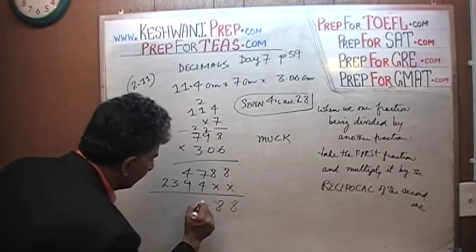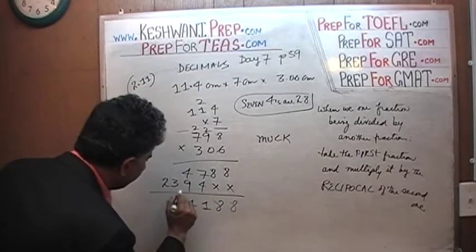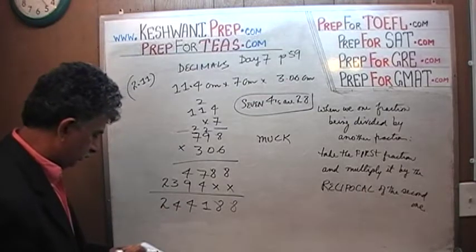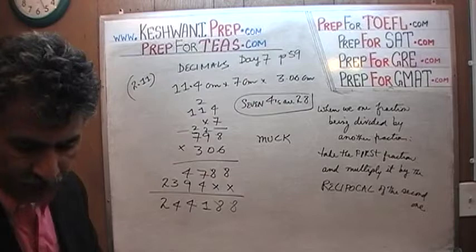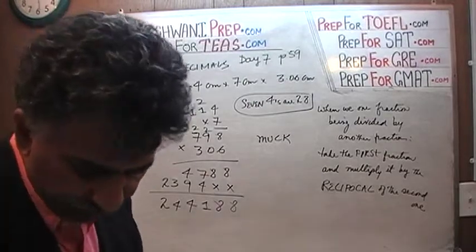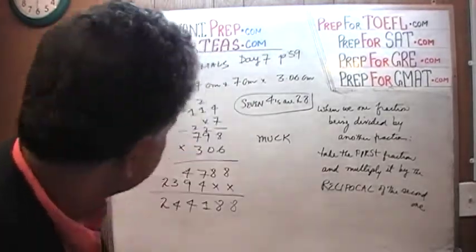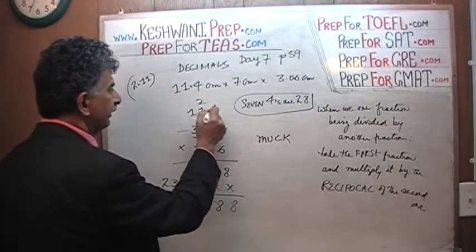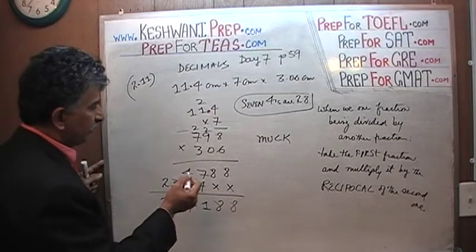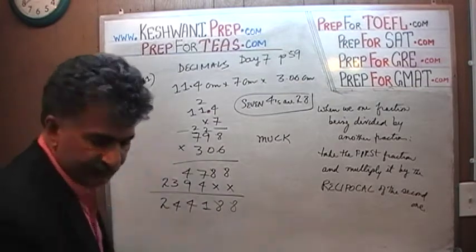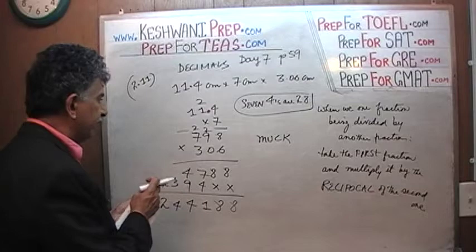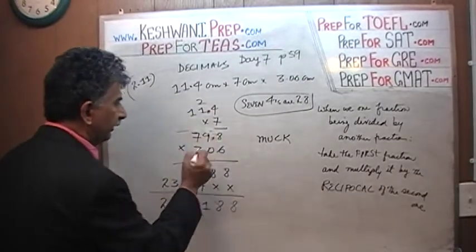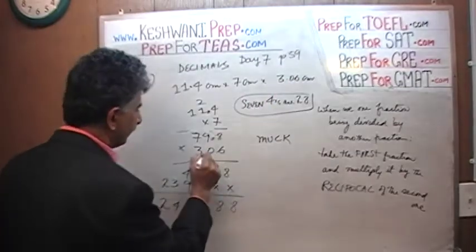Adding up our partial products: 7 plus 4 is 11, carry 1; plus 4 is 14, carry 1. We get 244188. Now we take care of our decimal: 11.4 has 1 decimal place, and 7 has none — giving an intermediate result of 79.8. Then we multiply by 3.06, which has 2 decimal places. Together that's 3 decimal places total.